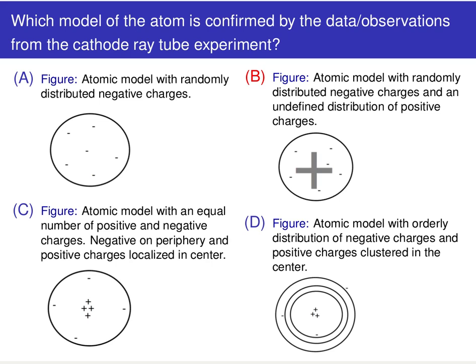As a result, the correct answer is B: we know there are positive and negative charges, but who knows what that positive charge distribution looks like. This is one of the very important scientific and philosophical points here.